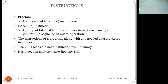A program is a sequence of machine instructions. An instruction is a group of bits that tell the computer to perform a specific operation — a sequence of micro-operations. The instructions of a program, along with any needed data, are stored in memory. The CPU reads the next instruction from memory and places it in the instruction register (IR), which stores the address of the next instruction.